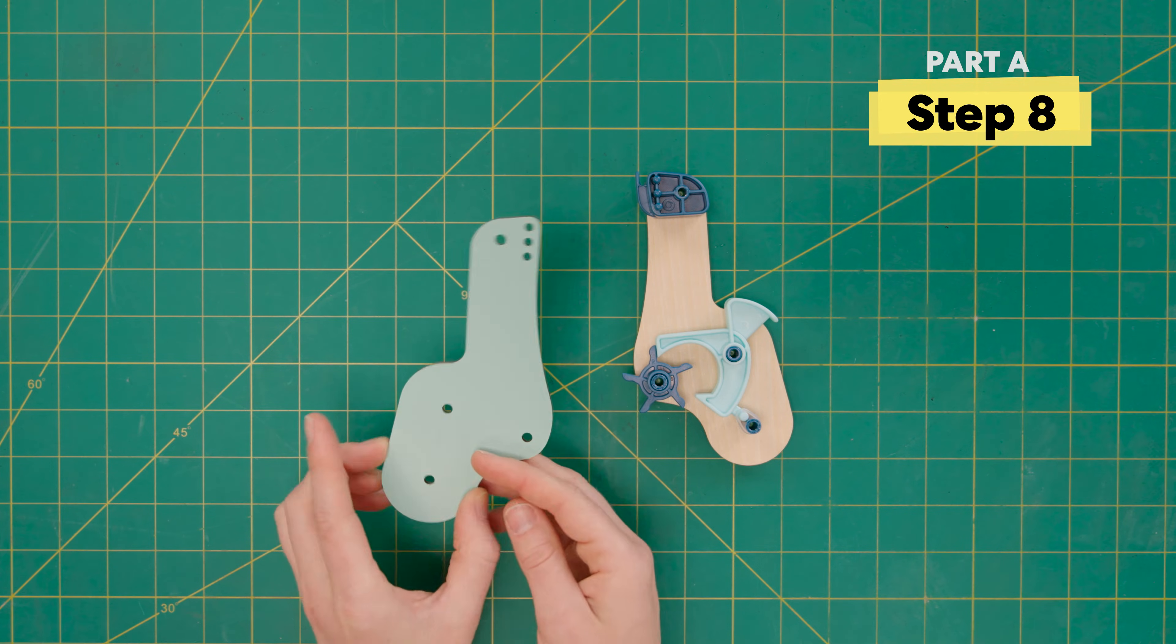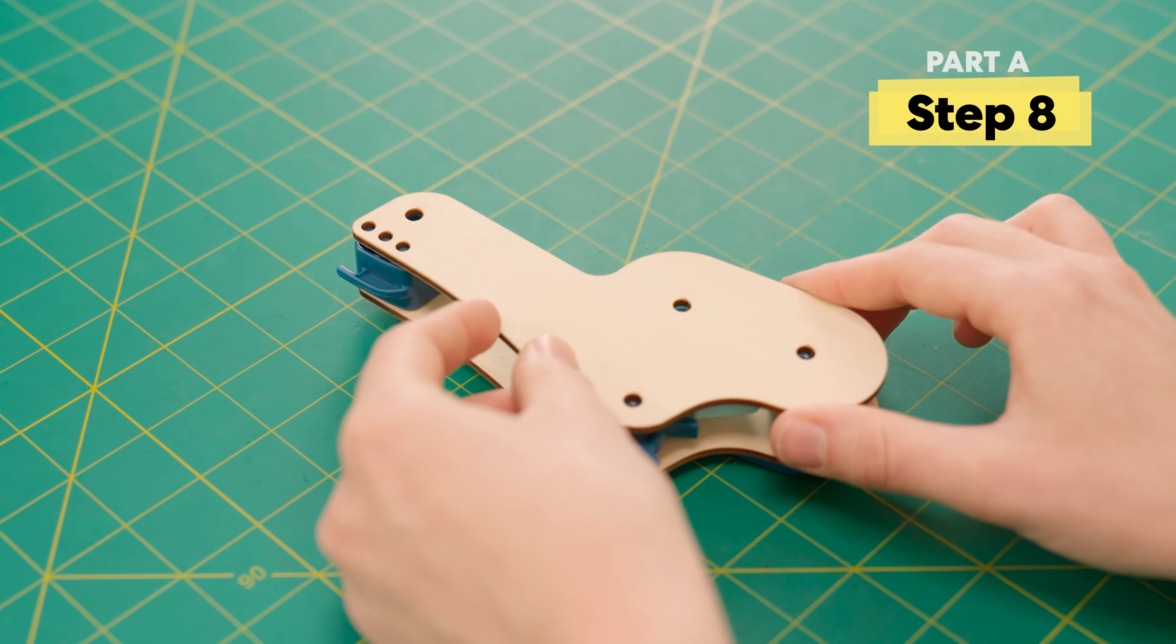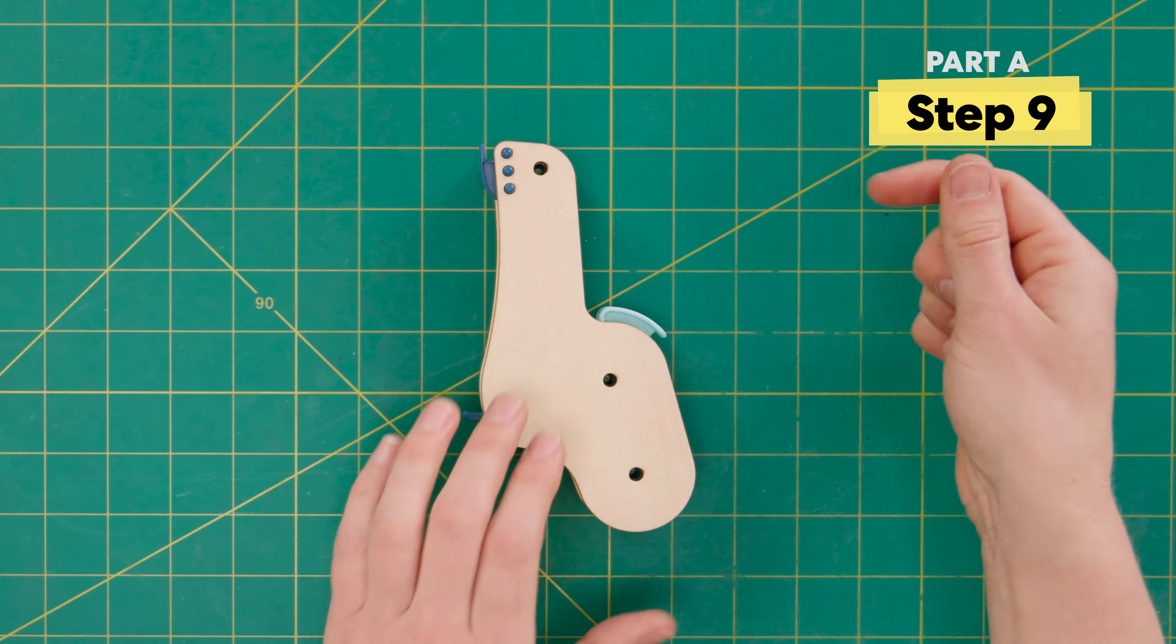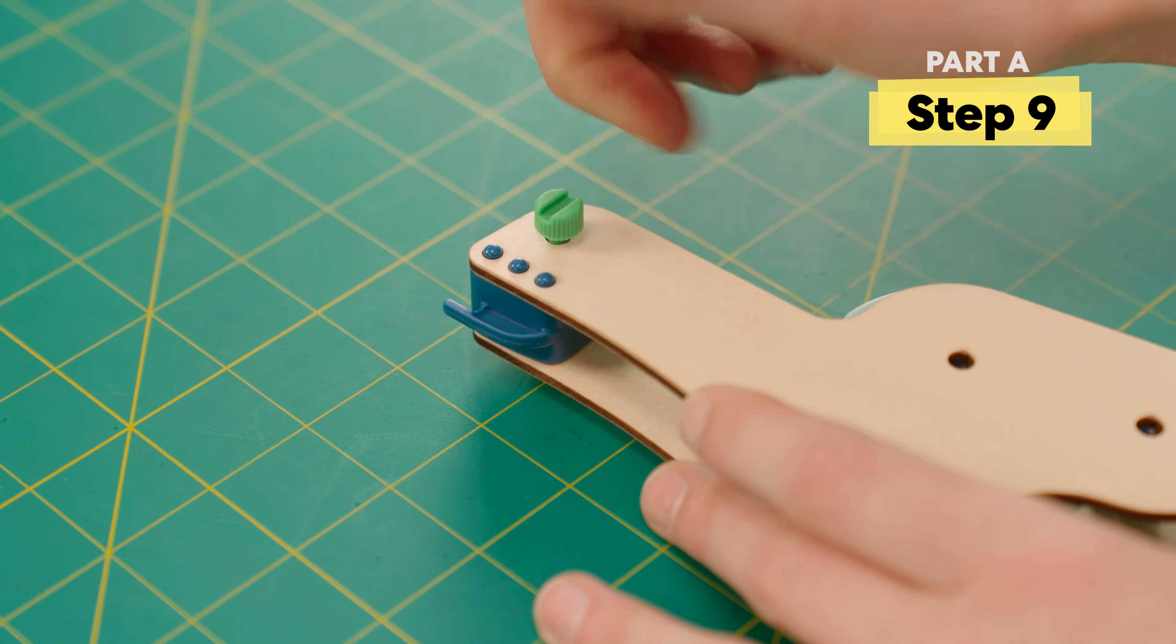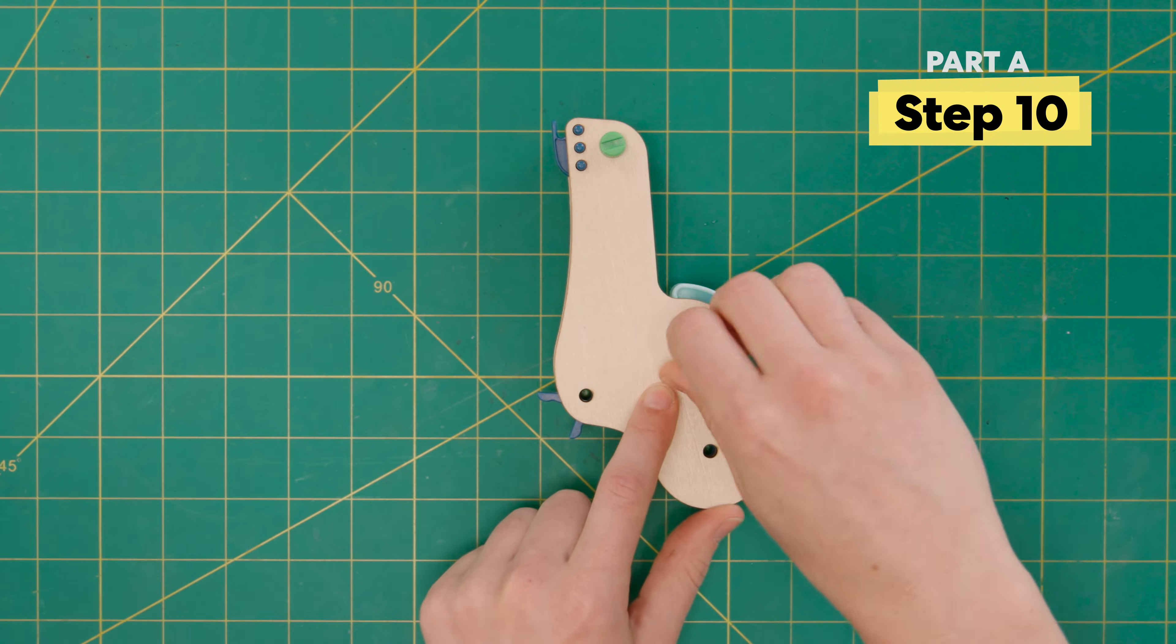Next, grab this blue painted piece and then flip it over to sandwich everything you've just assembled. Secure into place with a green bolt and attach the rest down with the blue bolts.